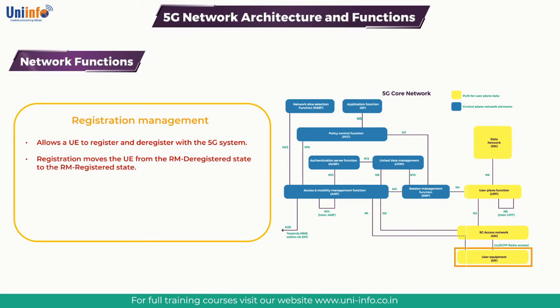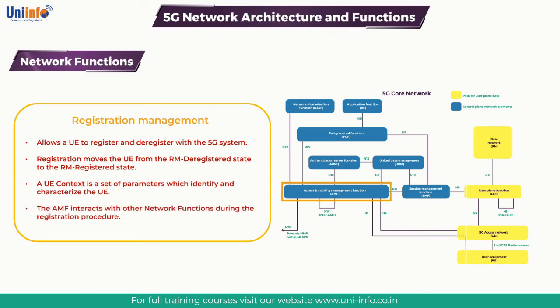Registration moves the UE from the RM-DEREGISTERED state to the RM-REGISTERED state. Registration creates a UE context within the network — a UE context is a set of parameters which identify and characterize the UE. Some of the parameters belonging to a UE context are presented in the figure shown on screen. The AMF interacts with other network functions during the registration procedure; for example, the AMF forwards the Permanent Equipment Identifier (PEI) to the SMF, UDM, and PCF.